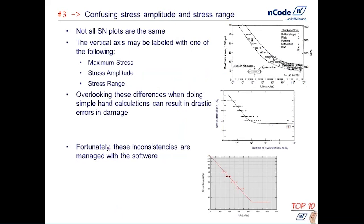We weren't doing any kind of mean stress corrections, and that max stress was really something like a stress amplitude. As we got more sophisticated and gained more knowledge about fatigue, we began to describe it in terms of stress amplitude, which can also be described in terms of stress range. The stress range, if the mean stress is zero, is simply going to be twice the amplitude. If you overlook any of these differences in a hand calculation, you're going to end up seeing some significantly drastic errors in your damage. So do keep in mind the labels on the axes — they vary depending upon the literature or how the material is characterized.